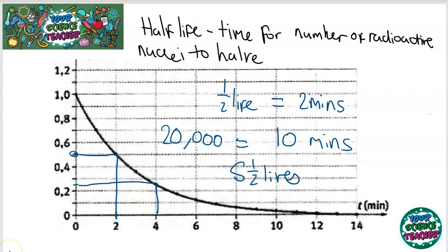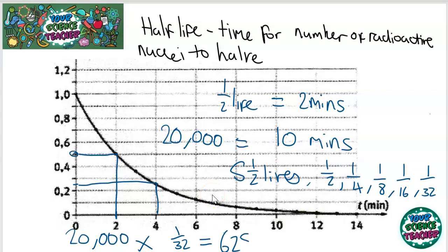After one half-life, you'll have a half. After another half-life, you'll have a quarter of what you started with. After another, you'll have an eighth. After another, you'll have a sixteenth. And after one more, you'll have only 1/32nd of what you started with. So to work out the number of nuclei left, all you'd need to do is times that 20,000 by 1 over 32. And that will give you the number of radioactive nuclei you have left, which is 625 radioactive nuclei.